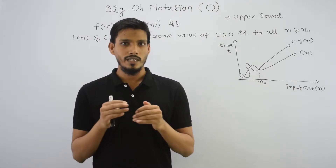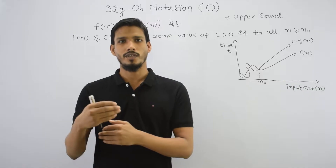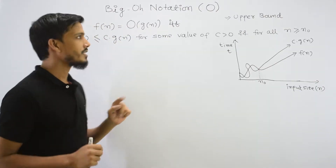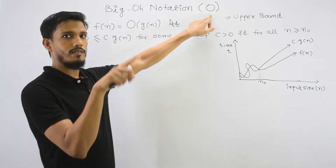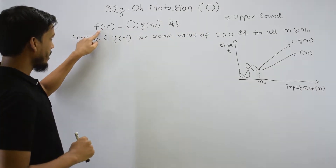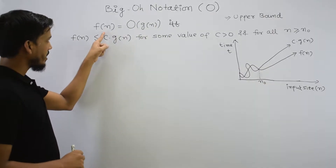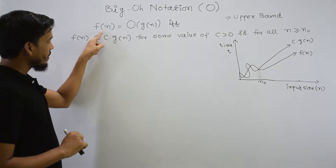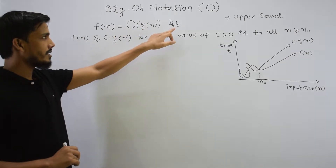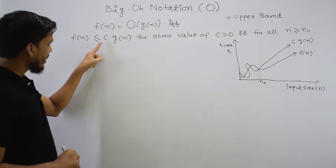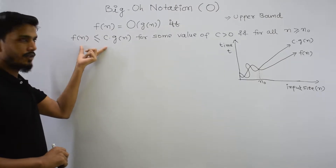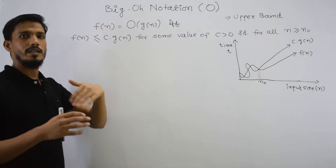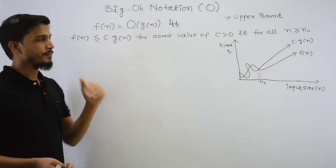Let's start with Big O notation. What is the application of Big O? How do we use it in algorithms? The definition of Big O notation: if we represent Big O as O, then f of n is equal to Big O of g of n. Here, two functions are used — f of n and g of n — and both are positive functions; negative functions are not considered.